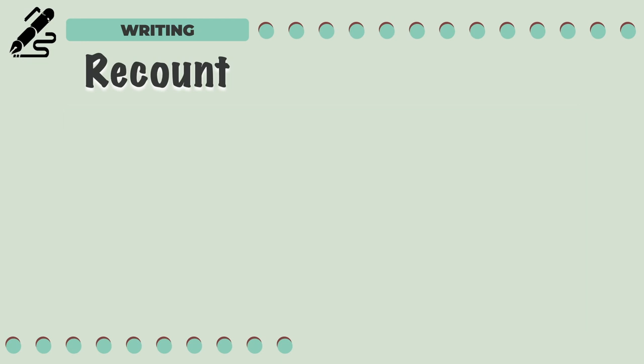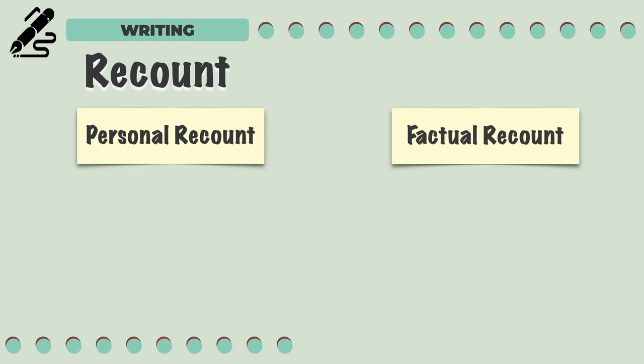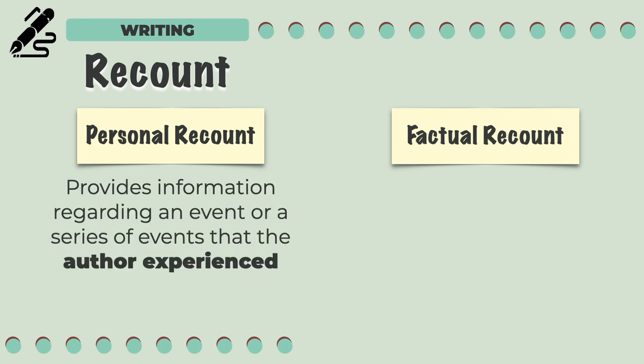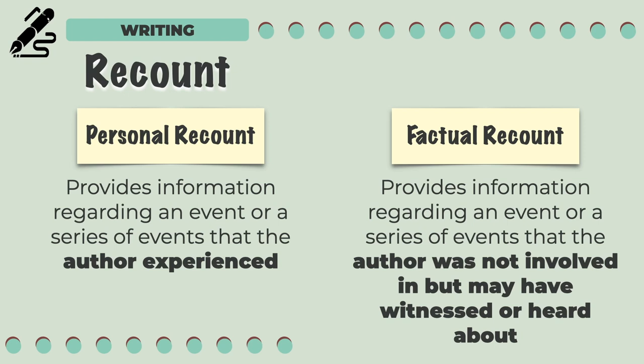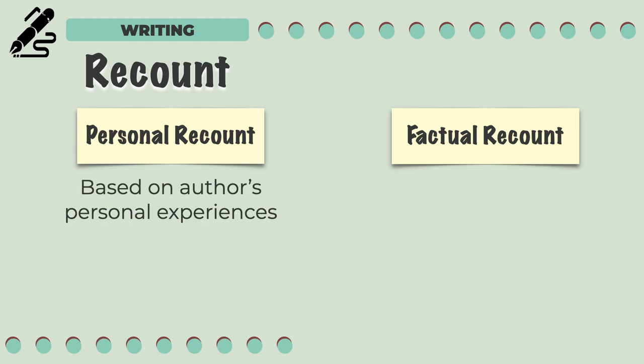There are two types of recount texts: personal recounts and factual recounts. A personal recount provides information regarding an event or a series of events that the author experienced. On the other hand, a factual recount provides information regarding an event or a series of events that the author was not involved in but may have witnessed or heard about. Specifically, a personal recount is based on the author's personal experiences, but a factual recount — from the word itself — is based on facts.